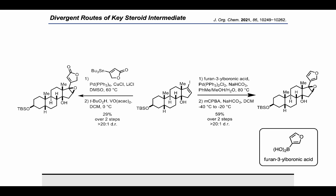Similarly, the vinyl iodide intermediate underwent Stille cross-coupling with a commercially available stannane in 42% yield and 80% BRSM, and hydroxyl-directed epoxidation under Sharpless epoxidation conditions provided the product in an overall yield of 29% over two steps.